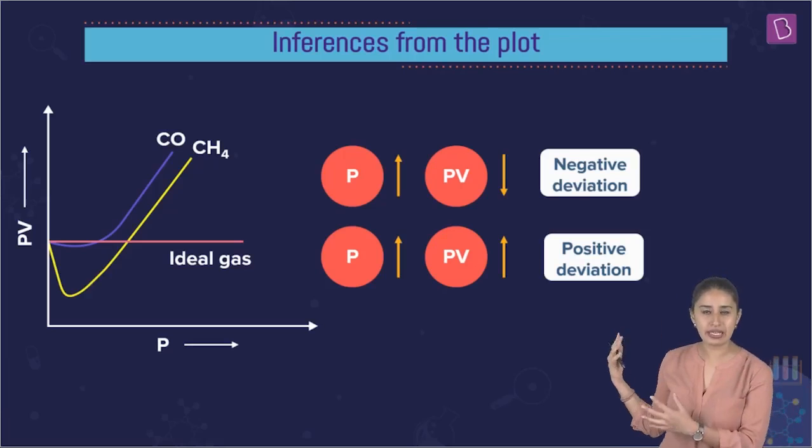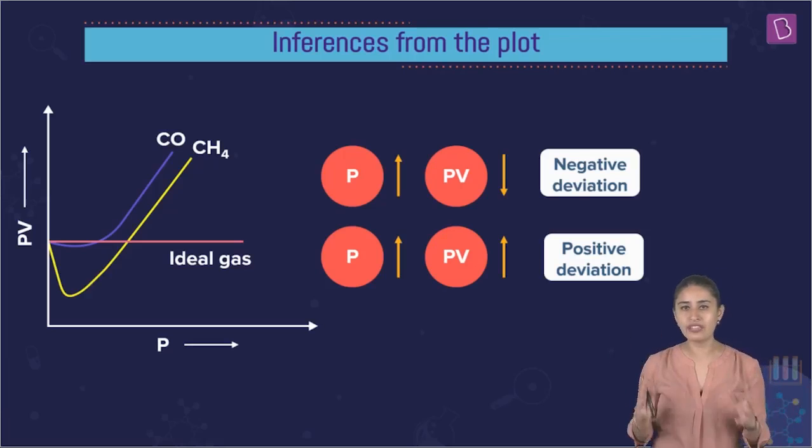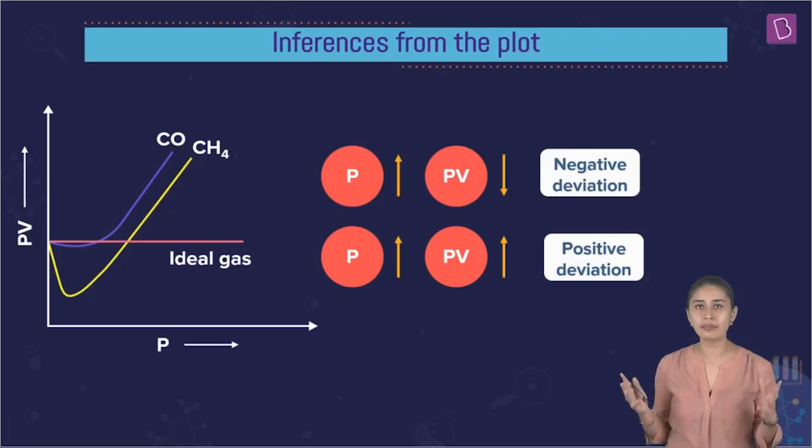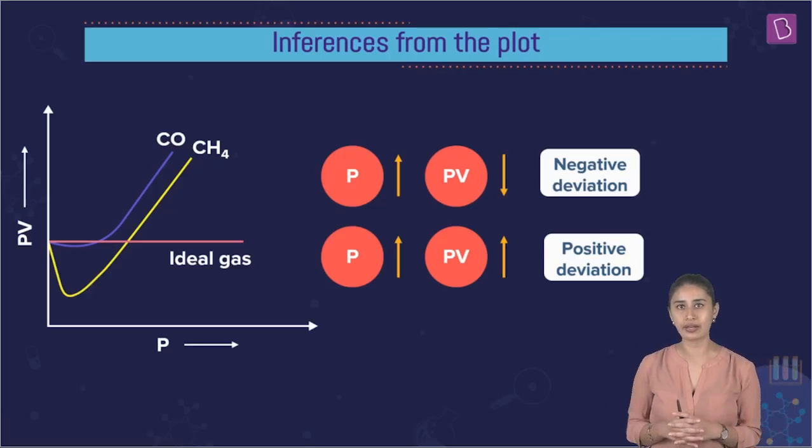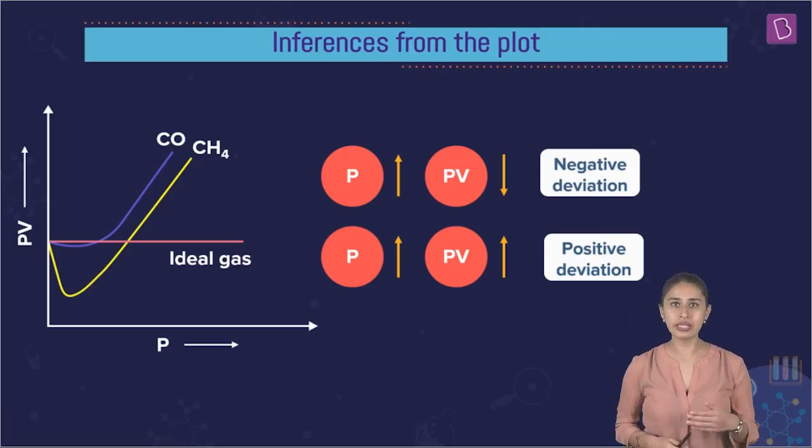When we saw experimental curves of PV versus P, we found out something very striking. We found out two types of curves where when we were increasing the pressure, PV was directly proportional, PV was increasing as well. And the second one, when we were increasing the pressure, PV first decreases, and then with the further increase in pressure, the PV also increases.